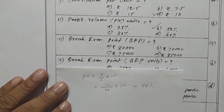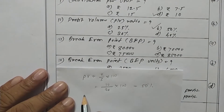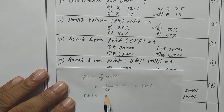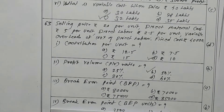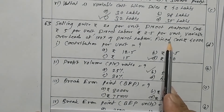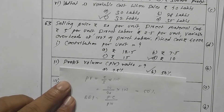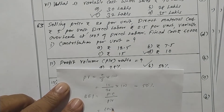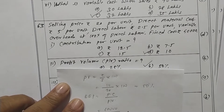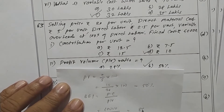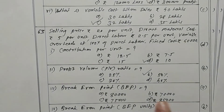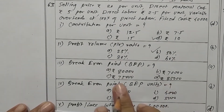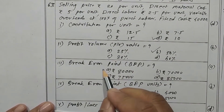What is the break even point? The formula is fixed cost upon PV ratio. Fixed cost is rupees 40,000, divided by 50 percent, gives rupees 80,000 as the break even point. Option A is the correct one.